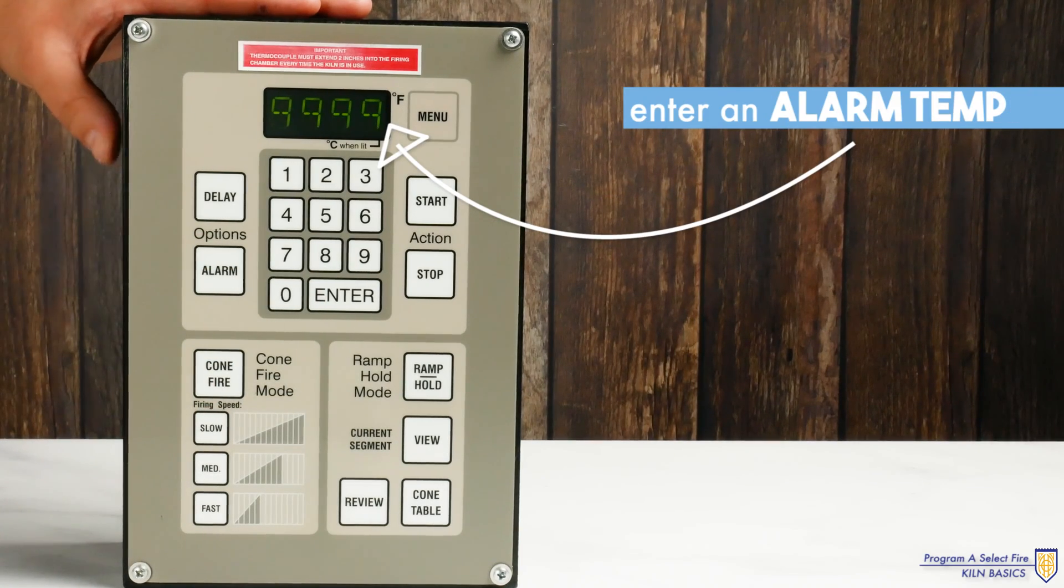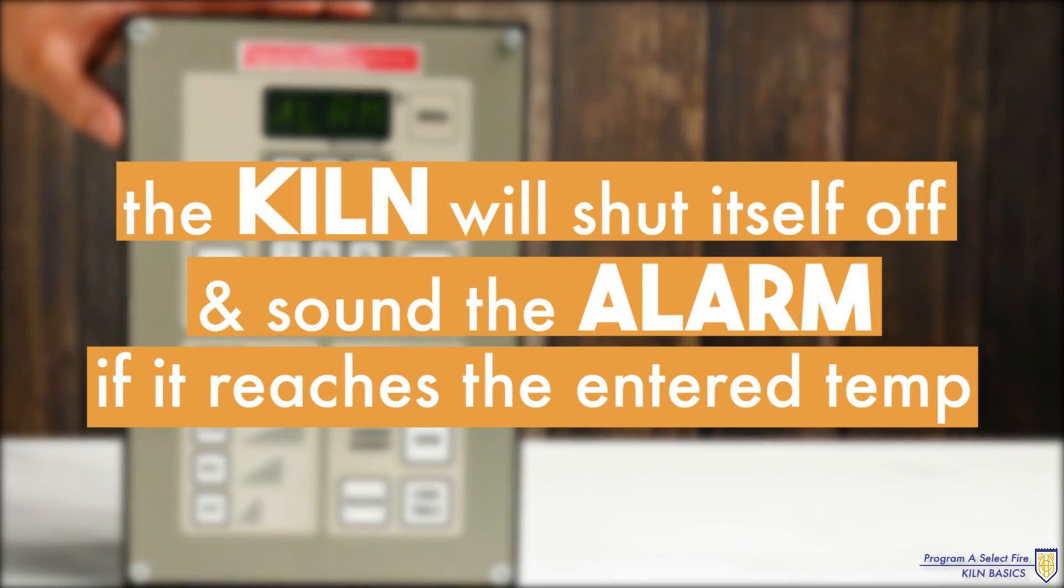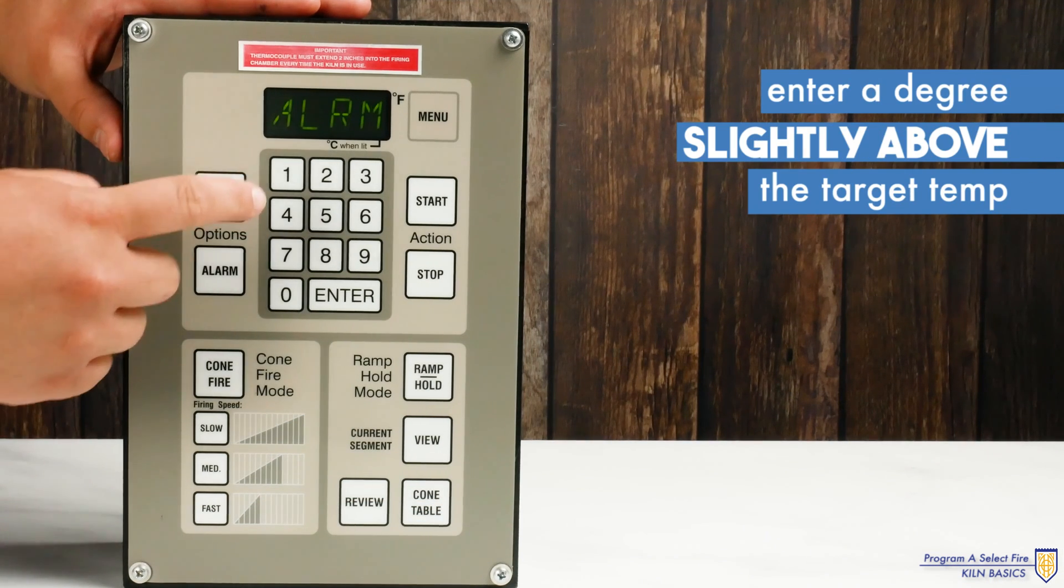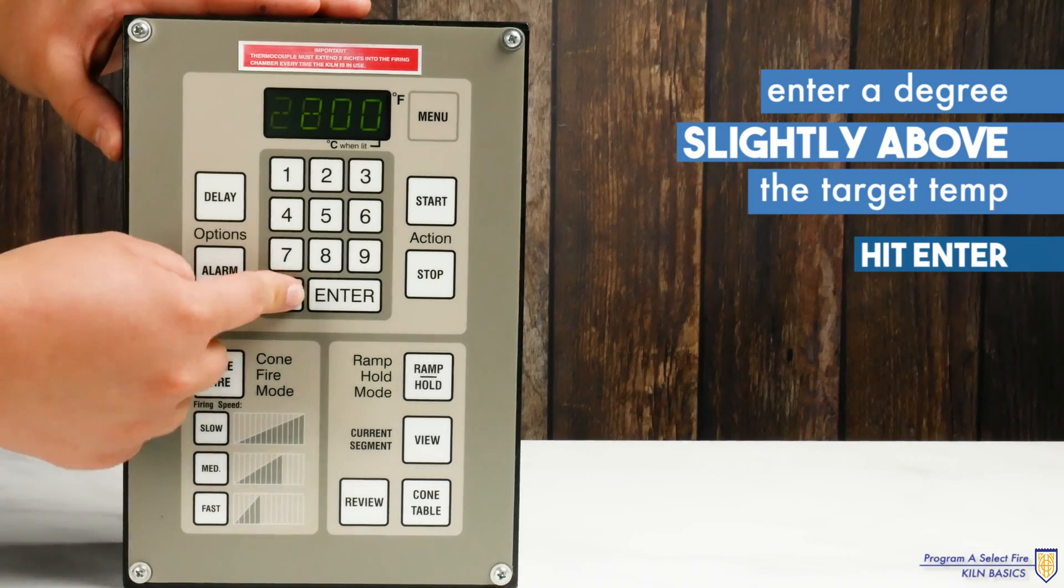Finally it will prompt you to enter an alarm temperature. The kiln will shut itself off and sound the alarm if it reaches the temperature we enter here. Enter a degree just slightly above the target temp and hit enter.